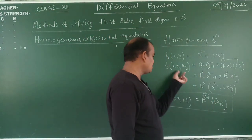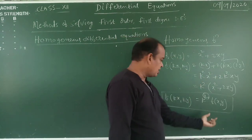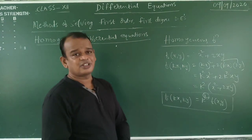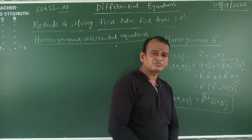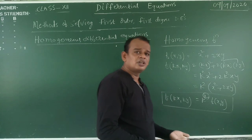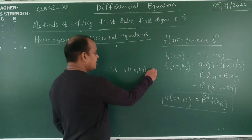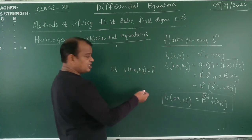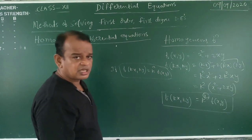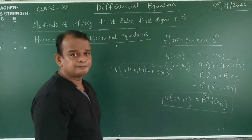When we replace x by kx and y by ky, k comes out as common. The index of k is called the degree or order of the homogeneous function. It is a homogeneous function of order 2. The definition: if f(kx, ky) = kⁿ · f(x, y), then f is said to be a homogeneous function of order n.